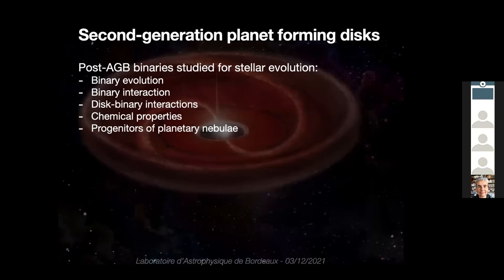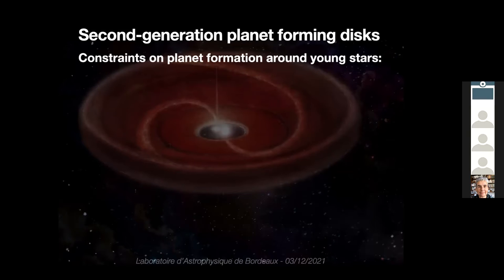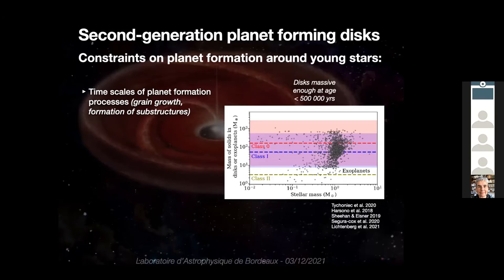These targets were mainly studied for stellar evolution because they are a product of binary evolution due to very strong binary interaction when one of the stars is a giant. There is re-accretion of mass onto the central star, exchanges of angular momentum, and very interesting chemical properties on the surface of the post-AGB star. They may be the progenitors of bipolar planetary nebulae thought to be due to the companion. But today I want to talk about these disks from a planet formation point of view. These disks are very interesting because they can bring constraints on planet formation also around young stars.